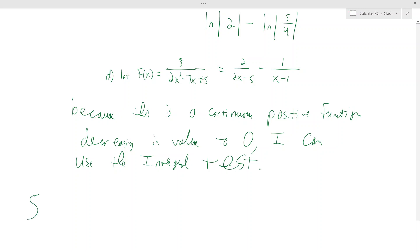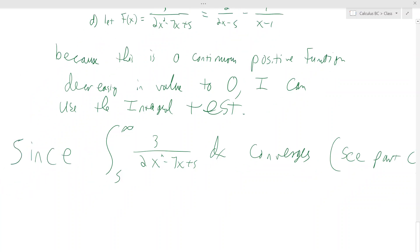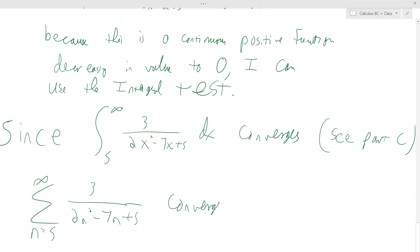Since, it also says the same thing in divergent. Since the integral from 5 to infinity of 3 over 2x squared minus 7x plus 5 dx diverges. See, part c perhaps. The summation from 5 to infinity of 3 over 2n squared minus 7n plus 5, it's okay guys, converges. And again, I'll be redundant, by integral test.